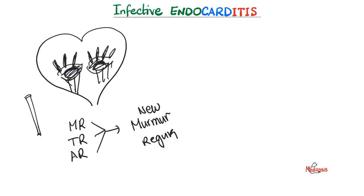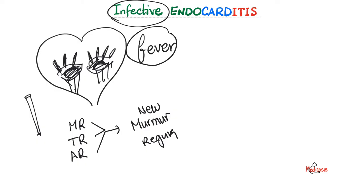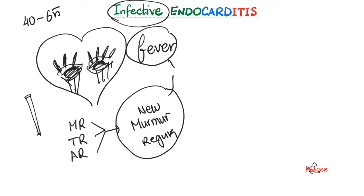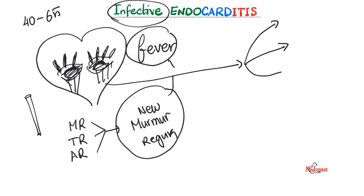This is an infection, so do we expect fever? Absolutely. Fever plus new murmur equals infective endocarditis. The patient is usually between 40 and 65, but it can happen at any age. All of this can spread to the blood, causing septic embolization, lung abscess, brain abscess, vertebral osteomyelitis, etc.